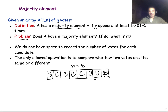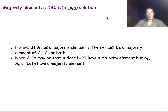Imagine that we don't have the space to keep track of all the candidates. Also, the only operation we are allowed to do is compare two votes — whether they are the same or different. We are not allowed to ask whether one vote is larger or smaller than another. Let's see how we can solve this problem using divide and conquer with an algorithm that is O(N log N).